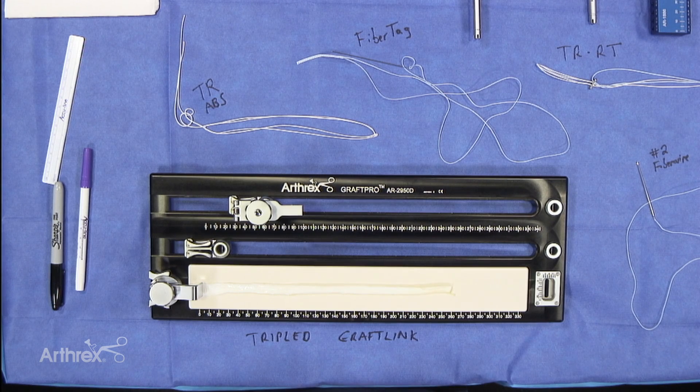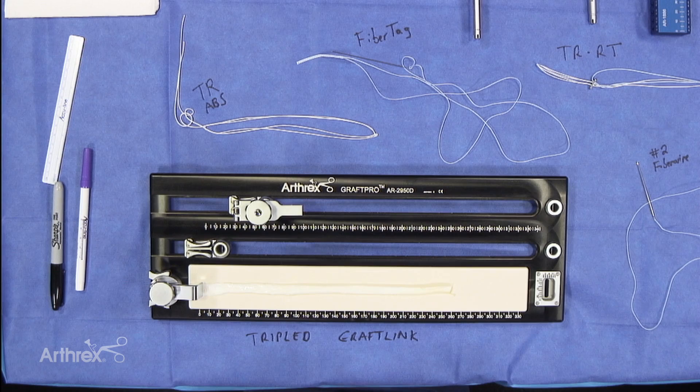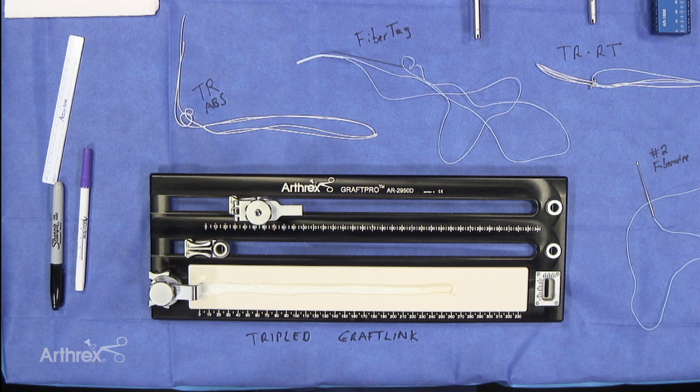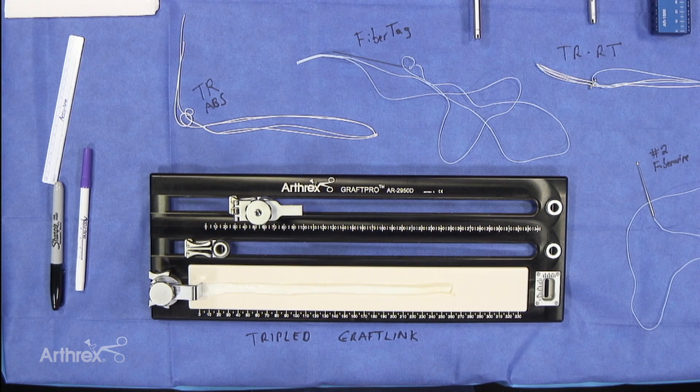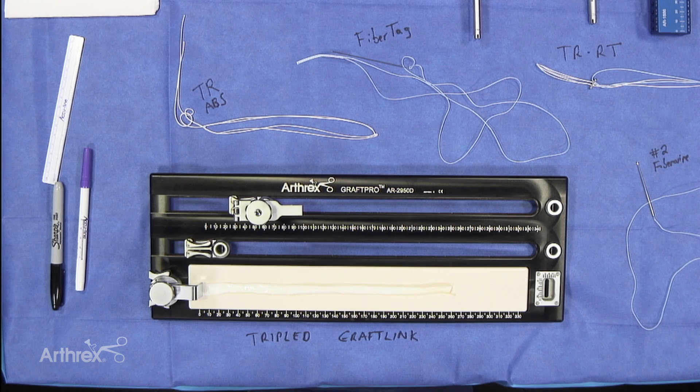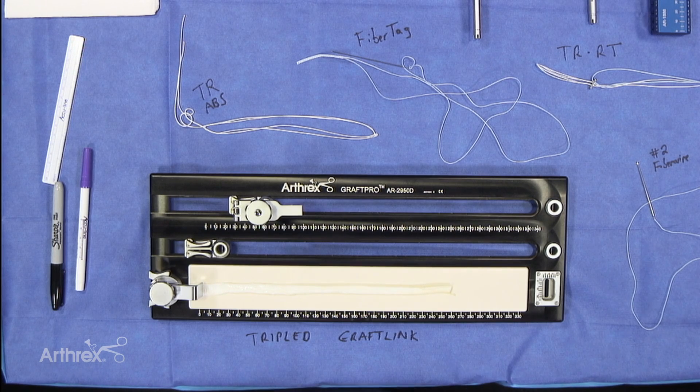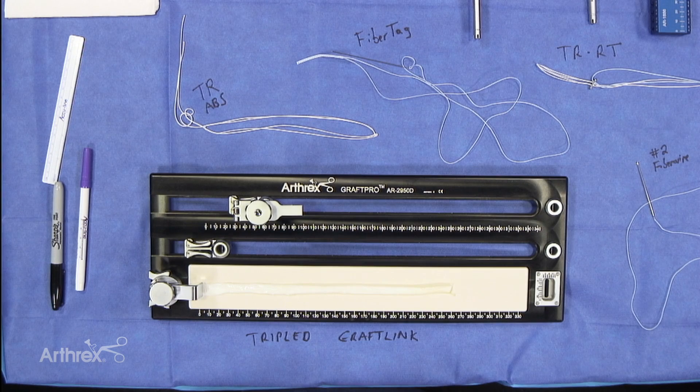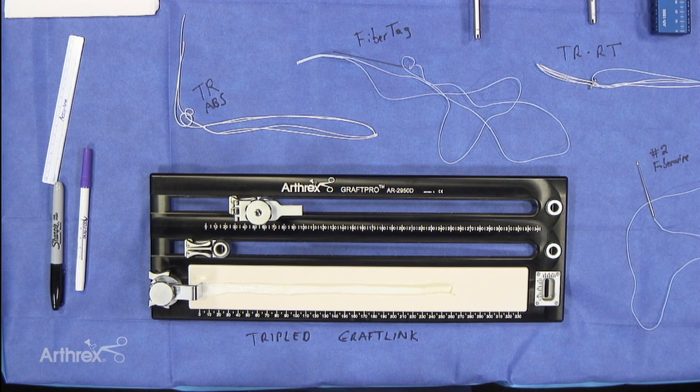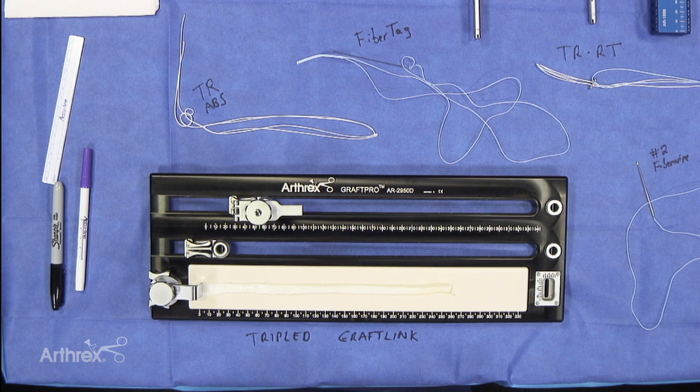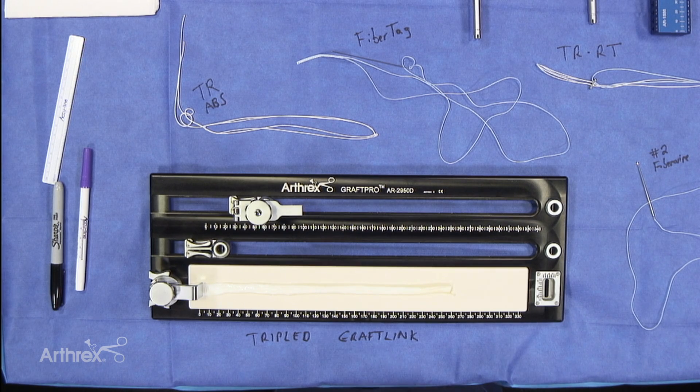Today we're going to show you how to do a tripled graft link using a graft that will be folded over in a triple fashion instead of a quadruple fashion. This allows you to use a much smaller length graft. This graft we have today is about 25 to 26 centimeters, and those graft lengths are readily available.